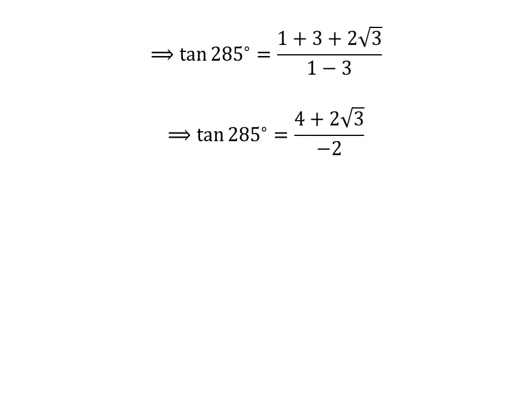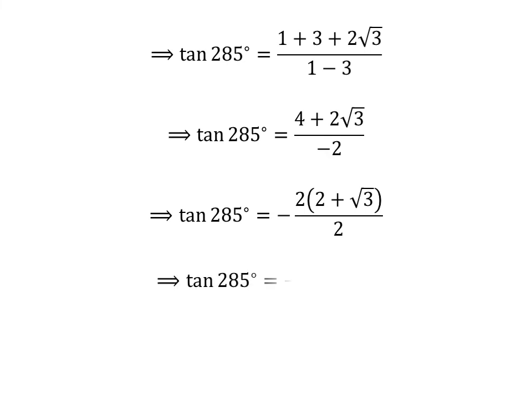Further simplification gives us tangent of 285 degrees is equal to 4 plus 2 times square root of 3 upon 1 minus 2. Taking out the common factor 2 in the numerator and canceling it with the denominator gives us tangent of 285 degrees is equal to minus 2 plus square root of 3.